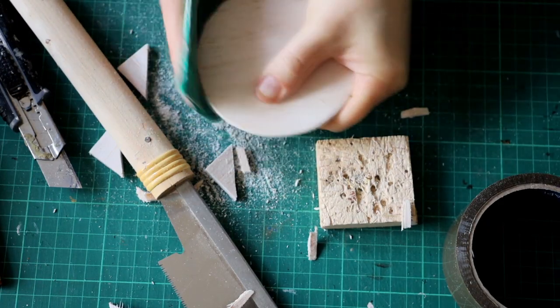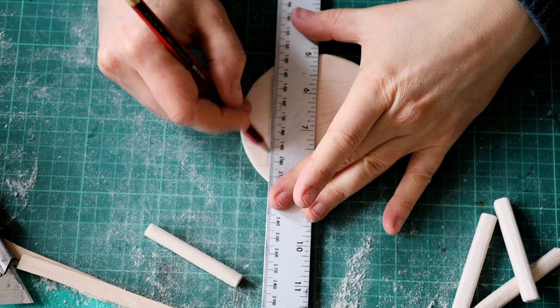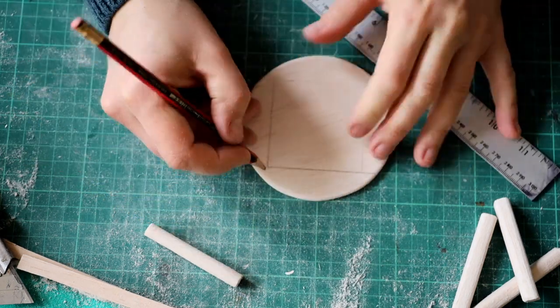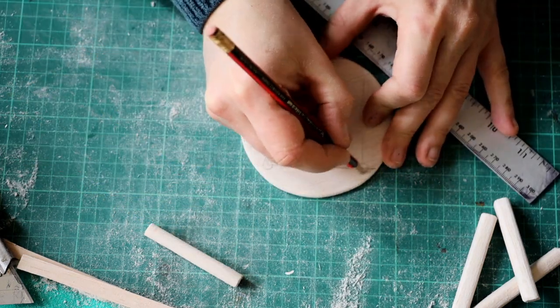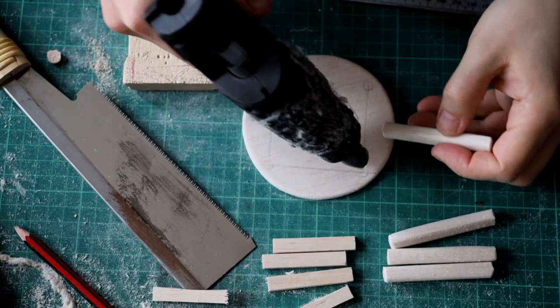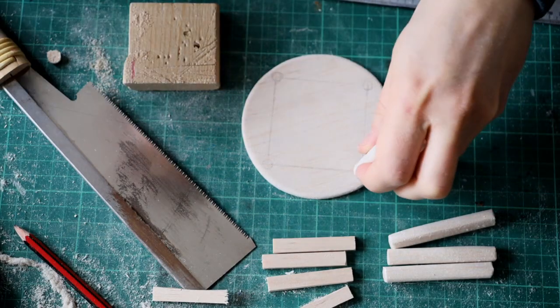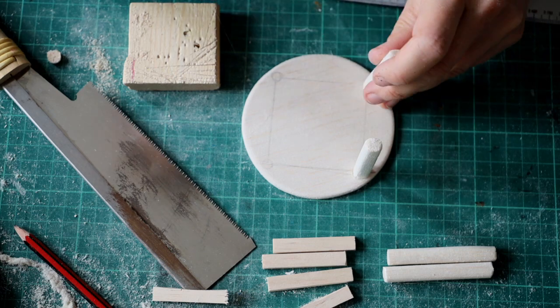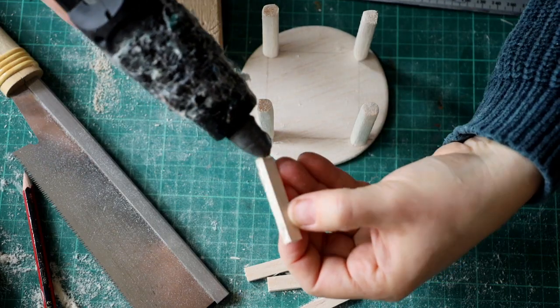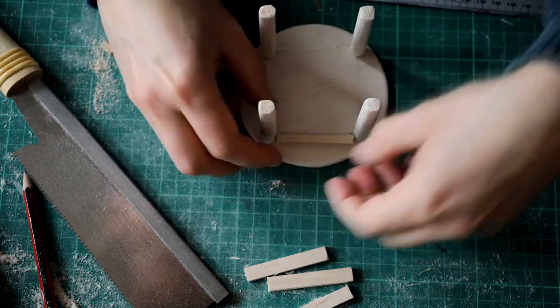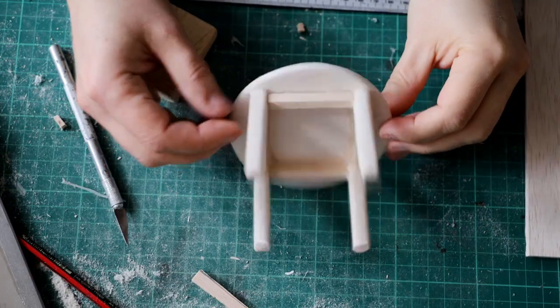Sanded it down, and then I marked up underneath some lines so I knew exactly where to place my legs. I used a hot glue gun to make sure the legs were secured to the table. Added some bits in between the legs to make sure that it will hold everything together and there you go, a little table.